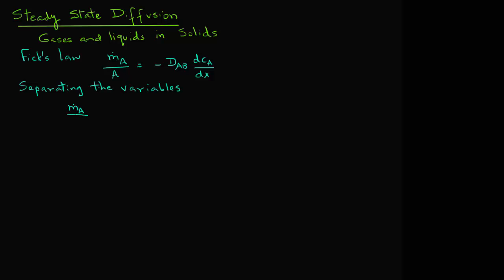If we separate the variables in this differential equation, we have m_A divided by A times dx equals minus D_AB times dC_A, since x and the concentration are the two variables we've separated in this expression.